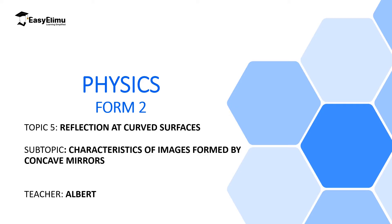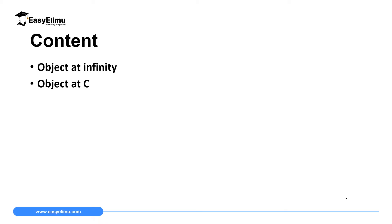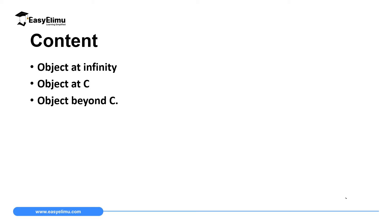In this lesson we will use those four rays to construct images on concave mirrors and determine the characteristics of those images. By the end of this lesson, you should be able to use any two of the rays to construct an image of an object at infinity, an object at point C (the center of curvature), and an object beyond C.